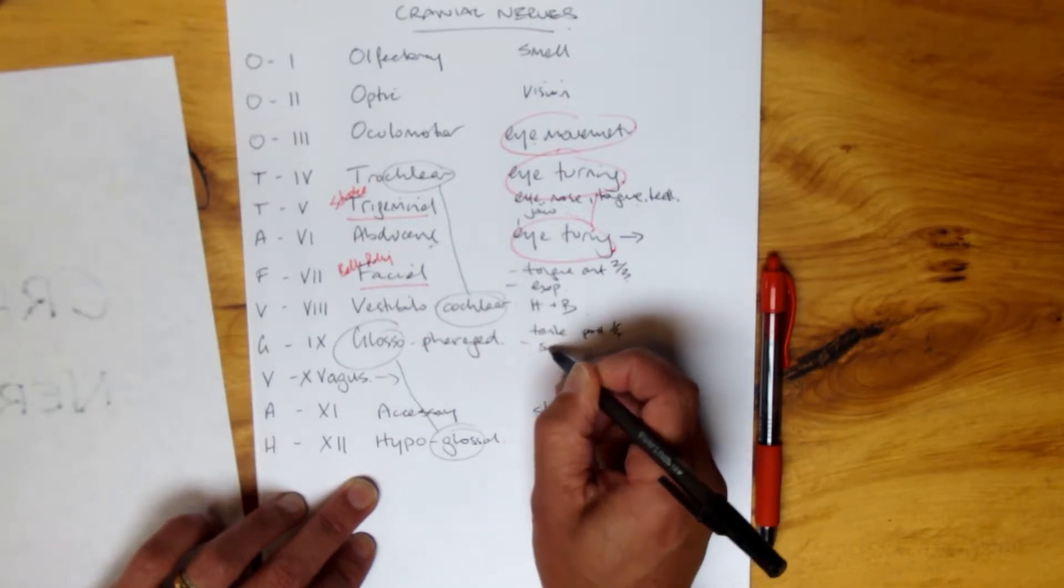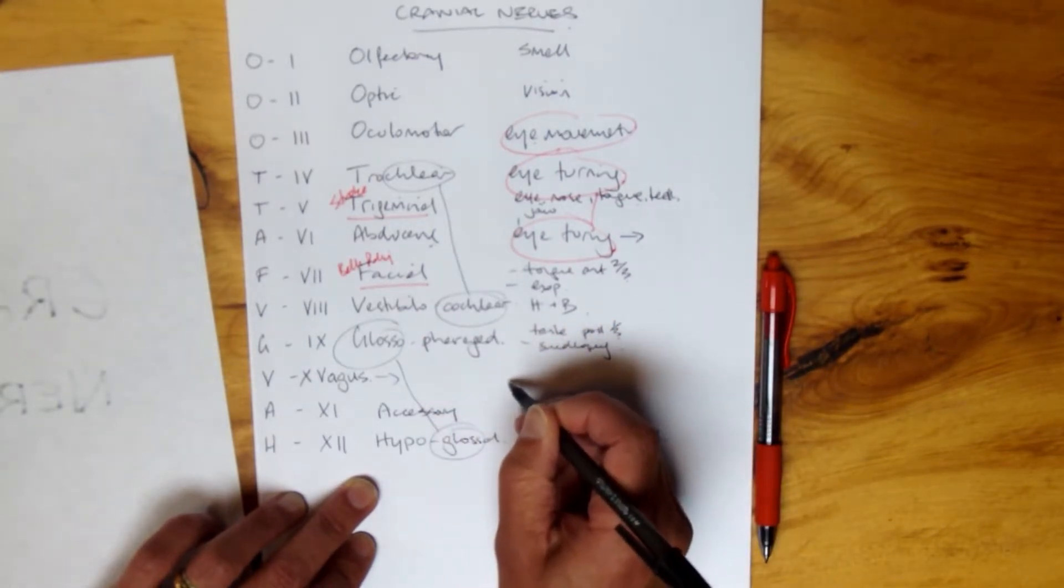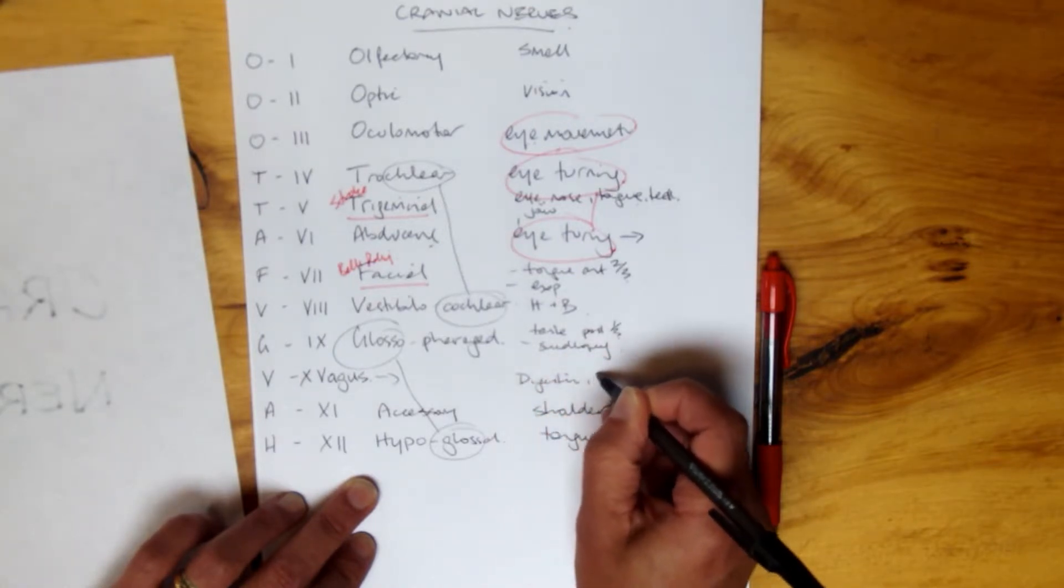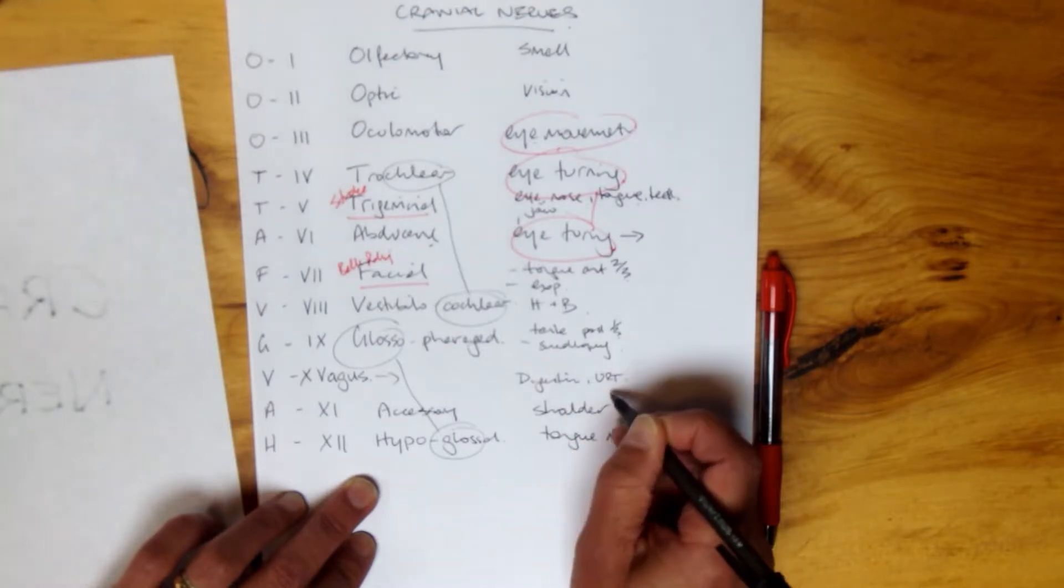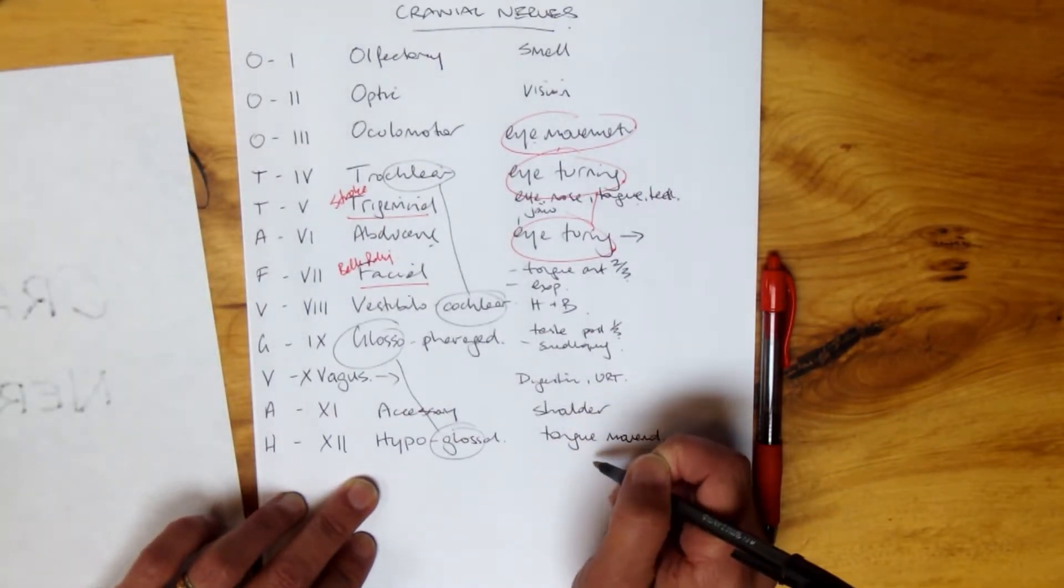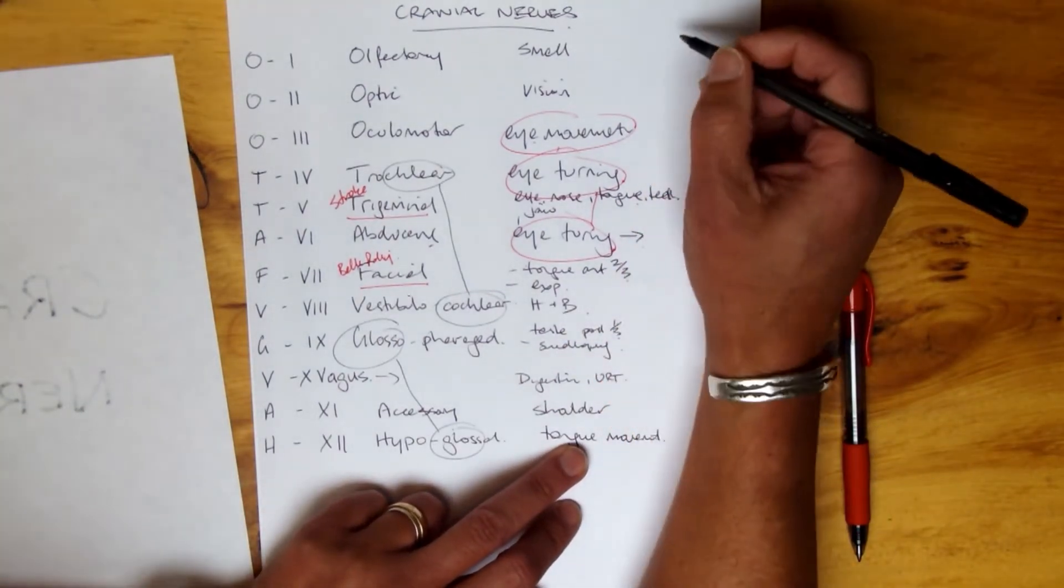The vagus, well, it's got a whole bunch of functions. I'm just going to put digestion and URT, upper respiratory tract here. Shoulder and tongue movement. Okay, we've got all the functions. Now thinking about are they motor or sensory?